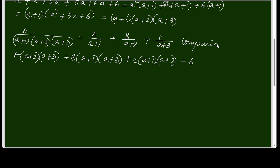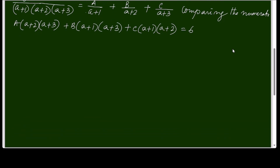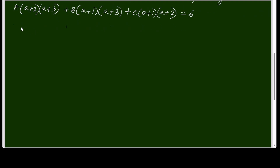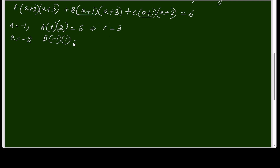To find A, B, C: taking a = -1, the B and C components vanish, giving A(1)(2) = 6, so A = 3. Taking a = -2, B(-1)(1) = 6, so B = -6. Taking a = -3, C(-2)(-1) = 6, so C = 3.